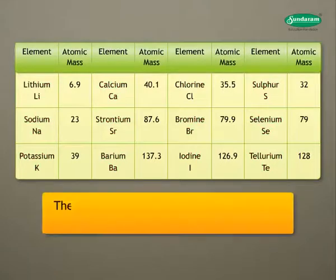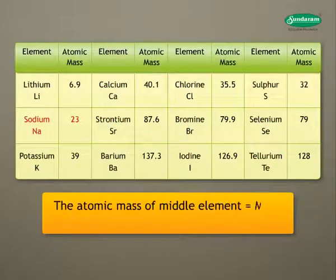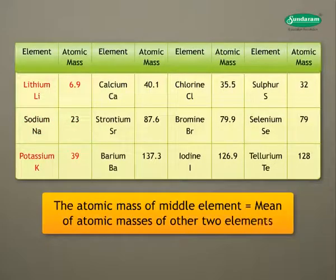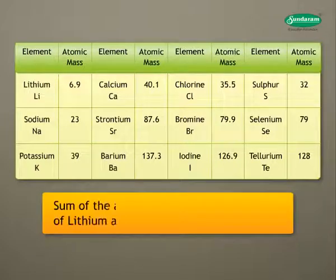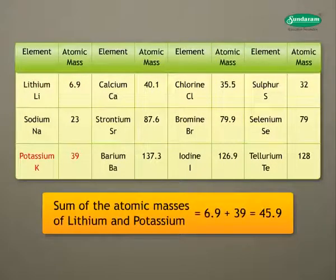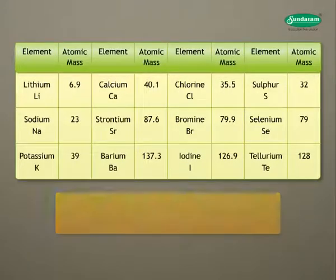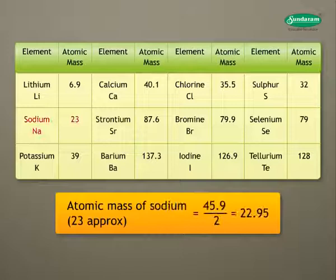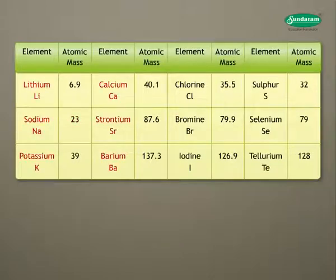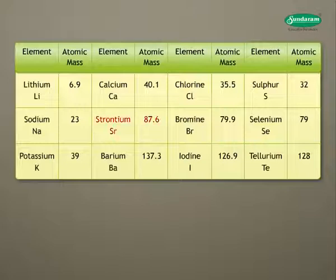These groups were called triads. In these triads, the atomic mass of the middle element was approximately the mean of the atomic masses of the other two elements. For example, the sum of atomic masses of lithium and potassium is 46. The mean of their masses is 23. You can see from the table that the mass of sodium is 23. The table shows four triads arranged vertically. We will now verify the atomic masses of strontium, bromine and selenium from the other triads.